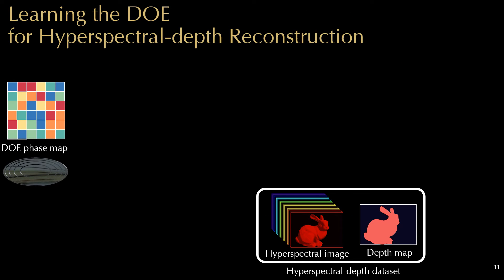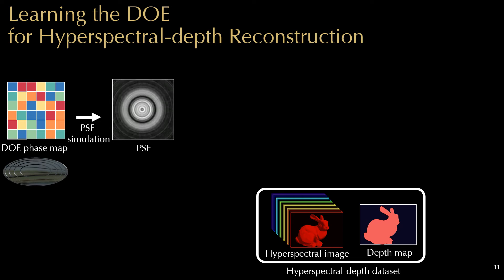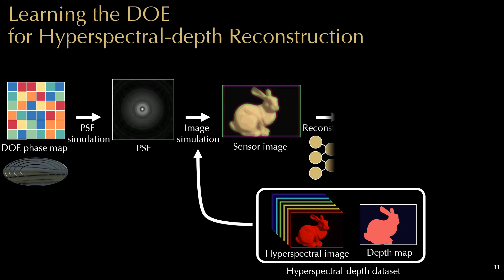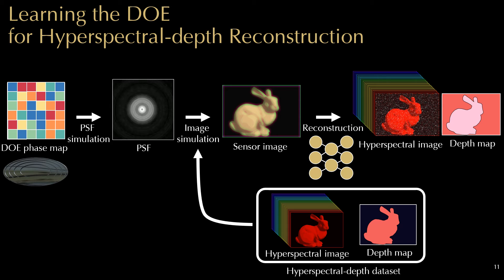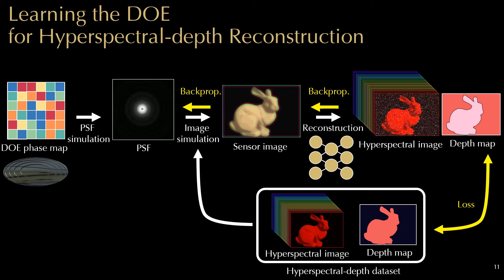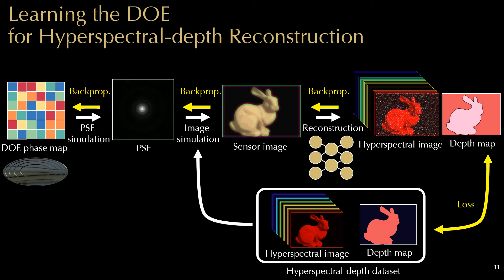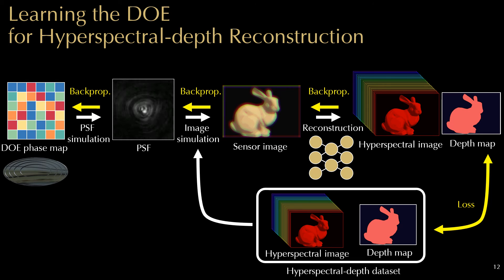To answer this question, we propose to learn the DOE profile using a differentiable simulation. That is, for a given DOE phase map and a hyperspectral depth dataset, we compute PSF, sensor image, and reconstruct the hyperspectral image and depth map using a neural network. We implement the entire algorithm with differentiable operations in order to optimize the DOE phase map and neural network using a first-order stochastic optimizer. As a result, we obtained the DOE and reconstruction method specifically designed for hyperspectral depth imaging.